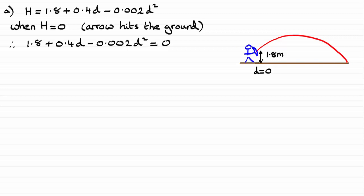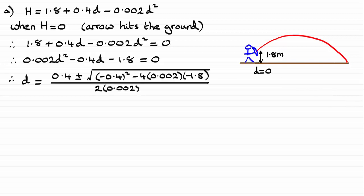Now I don't fancy trying to factorize this, so I'm going to use the quadratic formula. I don't like the fact that it starts with a negative, so I'm going to multiply throughout by negative one. So I can use the quadratic formula with a being 0.002, b being minus 0.4, and c being negative 1.8, and if you use the quadratic formula you'll get this line here.